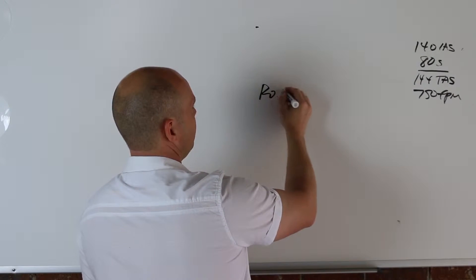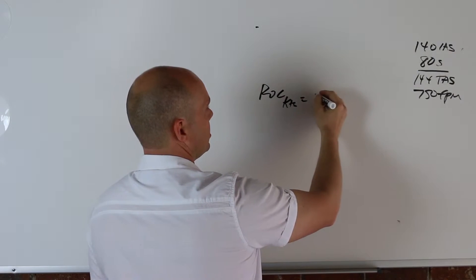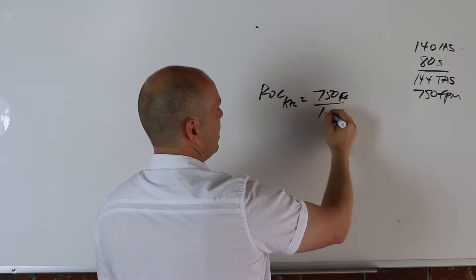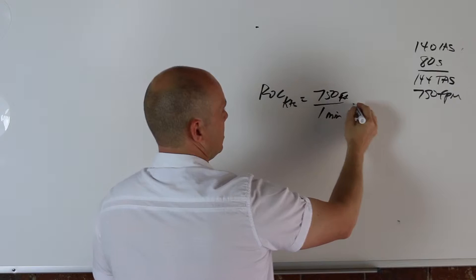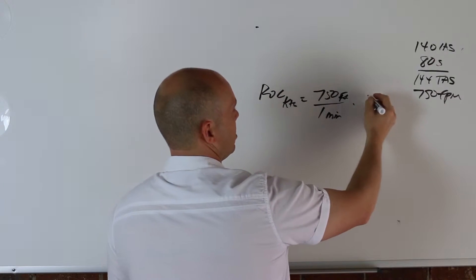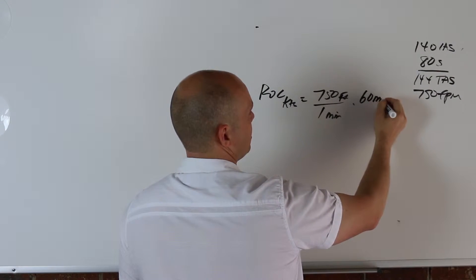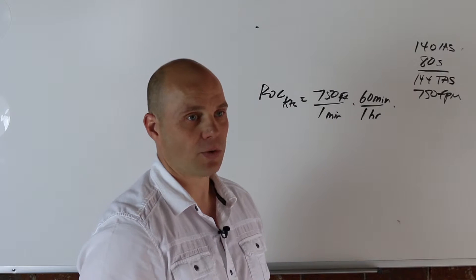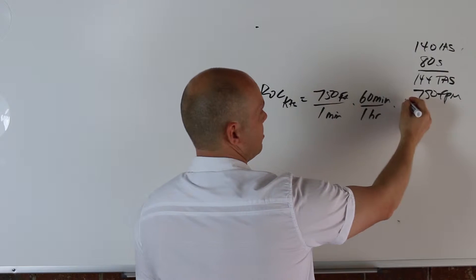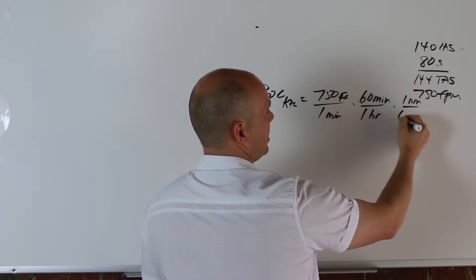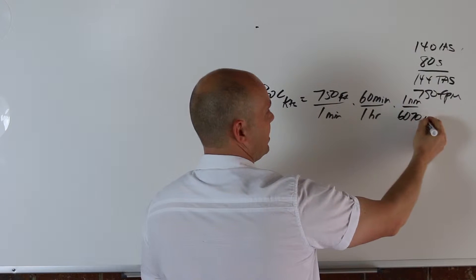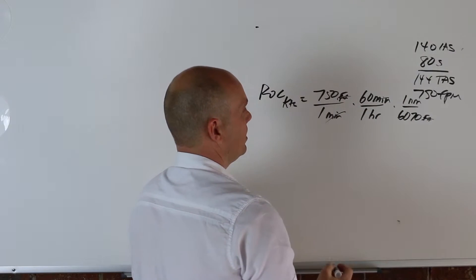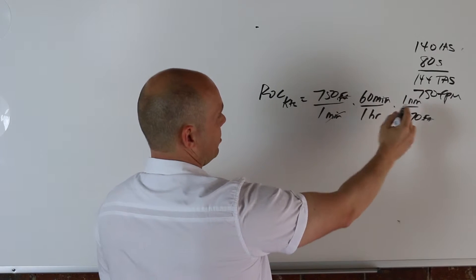So we have rate of climb in knots equals your 750 feet in one minute, and you know that there's 60 minutes in one hour, because knots is measured in hours. It's like miles per hour. So knots is the same thing. And then there's one nautical mile in 6,070 feet. So the feet cancel out and the minutes cancel out, and we're left with nautical miles per hour.